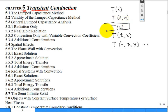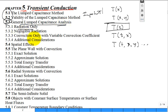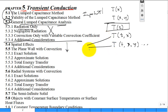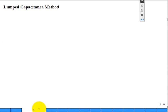Our starting point is temperature as a function of time only — these two sections cover the method of lumped capacitance, which is very important in heat transfer. Section 5.3 on generalized lumped capacitance for radiation we'll skip. Sections 5.4 and beyond cover spatial effects: temperature as a function of time and space, in 1D and 2D.